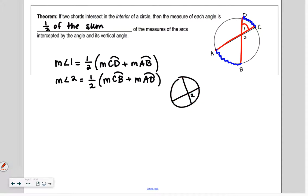So measure of angle one's right here. So where's its intercepted arc? Well, the intercepted arc is the one that's right here. So it's going to be half of the sum of that one, but also the intercepted arc for its vertical angle. Do you know what I mean by vertical angle? The one over here? That's its intercepted arc. So it's like you're finding the average of the two, right? That's what we're doing. It's the average of the two intercepted arcs.